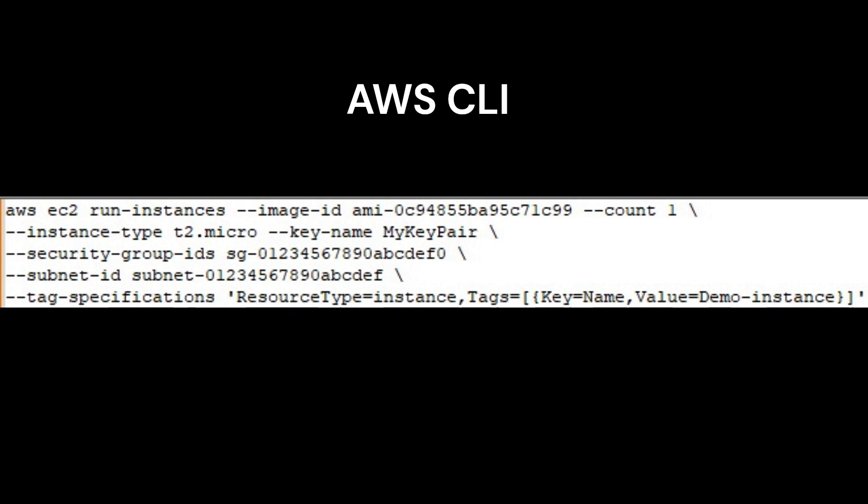you would use the following command. This command tells AWS to launch an EC2 instance using the specified Amazon Machine Image (AMI), with the specified instance type,